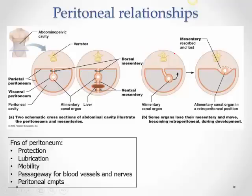Just like the lungs have a pleural cavity and the heart has a pericardial cavity, the abdominal organs have a large peritoneal cavity. All the abdominal organs invaginate into the peritoneal cavity. Here is the peritoneal cavity and an organ pushing into it — that pushing is known as invagination.